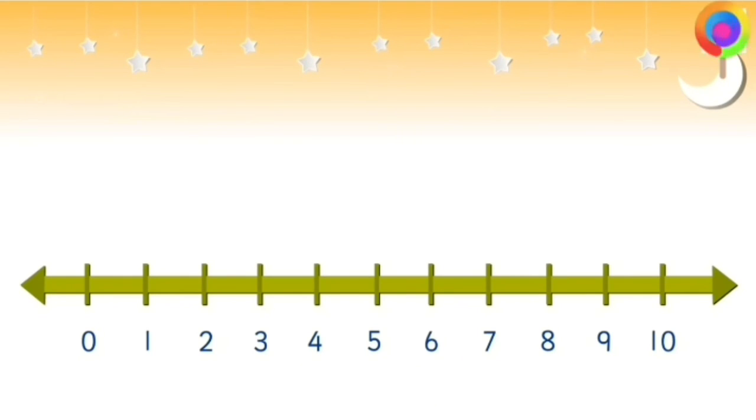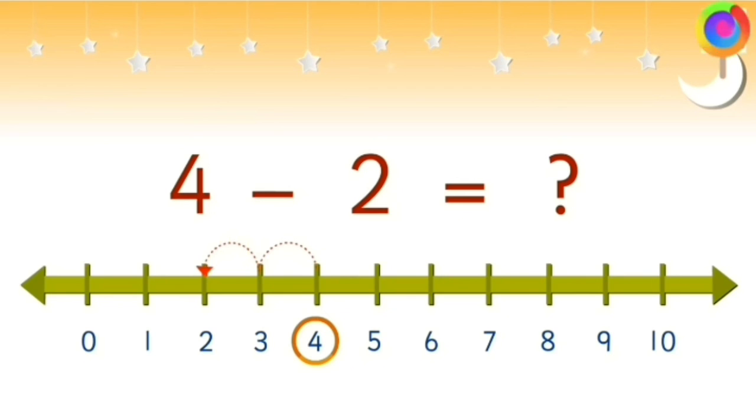Now, let us subtract 2 numbers. That is 4 minus 2. Start with number 4 and go 2 steps backward. So 4 to 3 and then to 2. We have got the answer as 2. So 4 minus 2 is equal to 2.